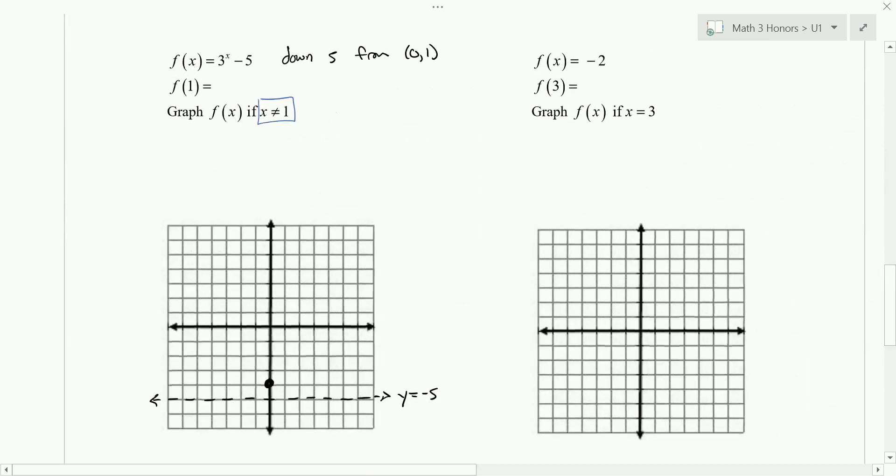And usually we pick another point. And because I have my domain restriction here, I want to know what f of one is. And so I'm going to plug a one in. And get three to the power of one minus five, which is negative two. And I'm going to put a big open circle there. And so then my graph looks something like that. So just a hole in the graph, everything else is there.